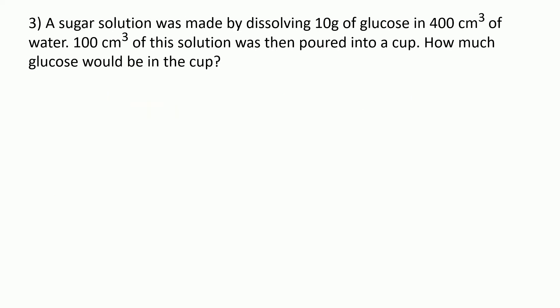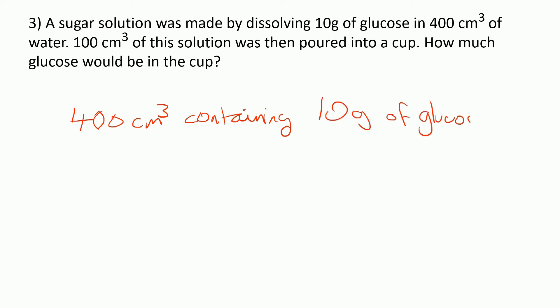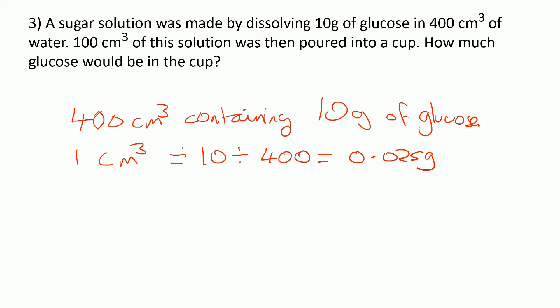Have a go at question three — pause the video and then resume when you're finished. We've got 400 centimetres cubed containing 10 grams of glucose. For 1 cm cubed, that's 10 divided by 400, which is 0.025 grams. For a 100 cm cubed sample, that's 0.025 times 100, which equals 2.5 grams.